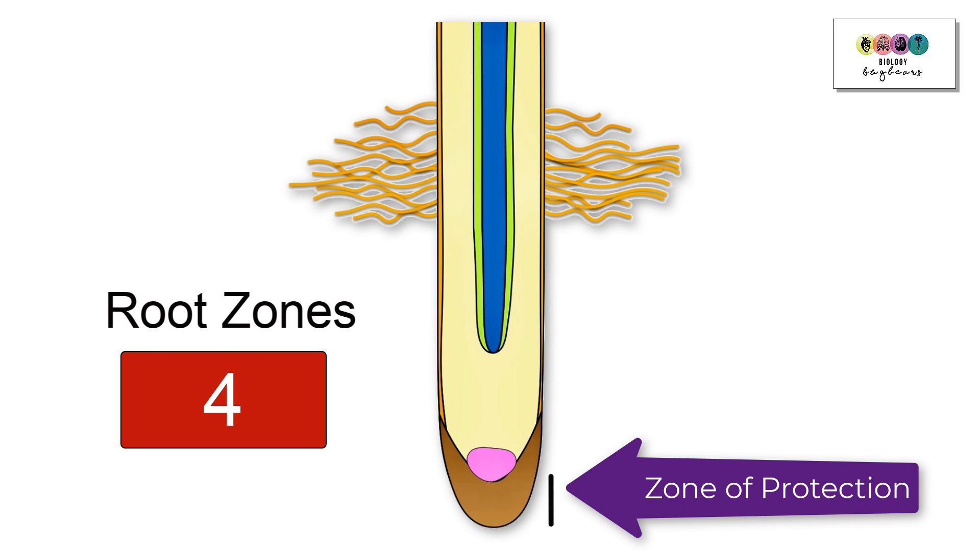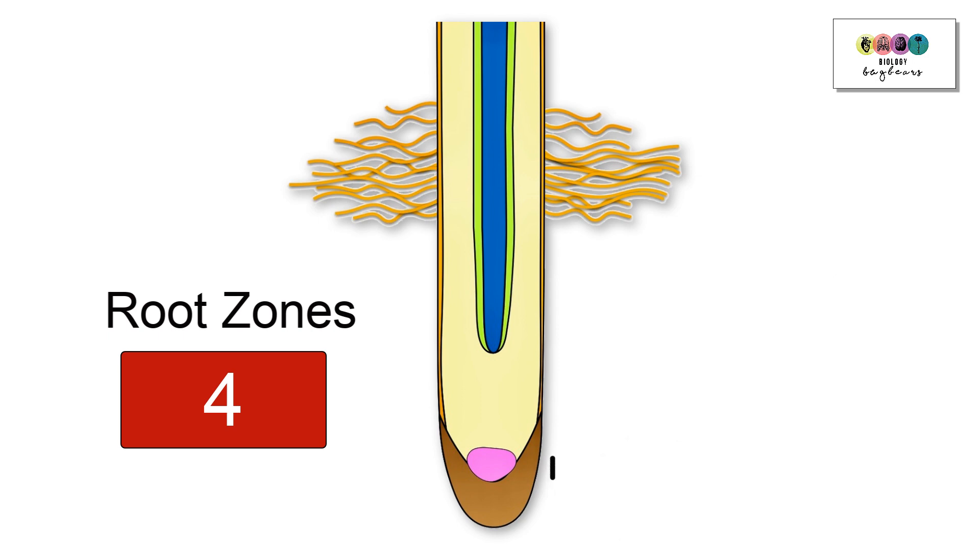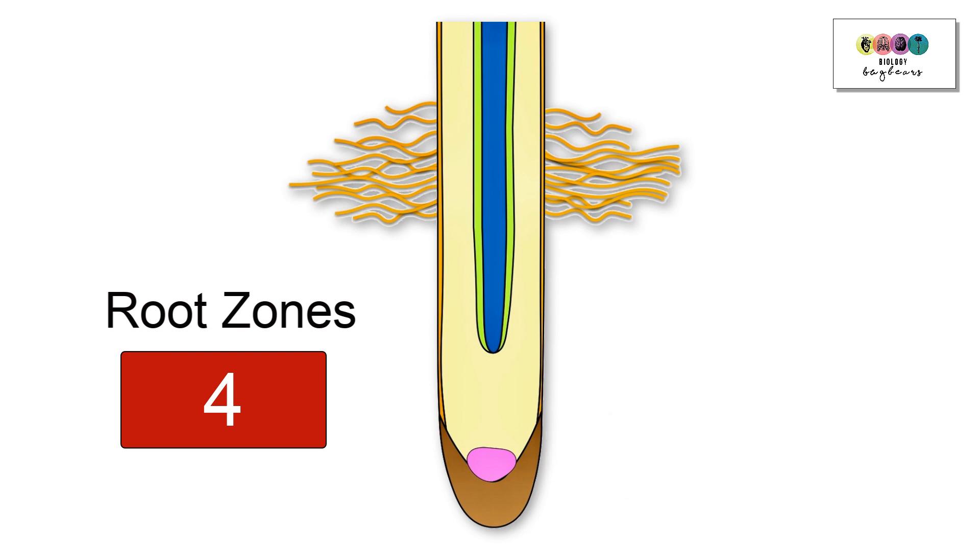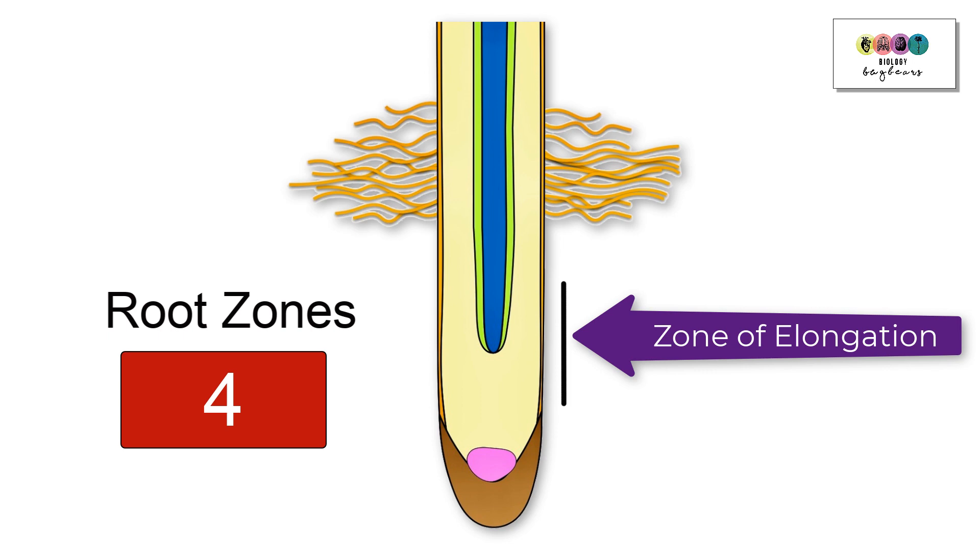Above this is the zone of cell production, this is where the cells of the meristem produce those new cells by mitosis. Above this is the zone of cell elongation, or the zone of elongation. This is where those newly produced cells will simply get longer.